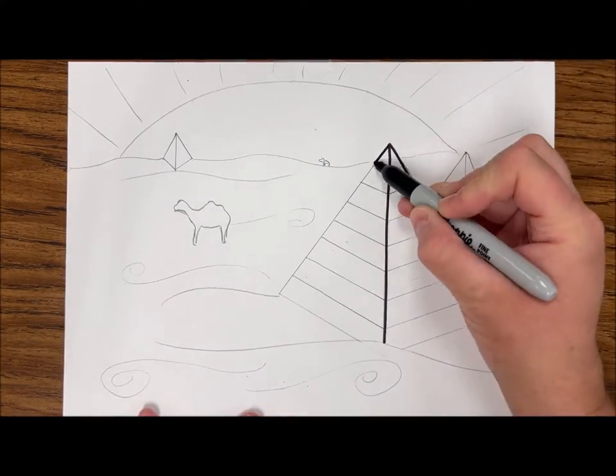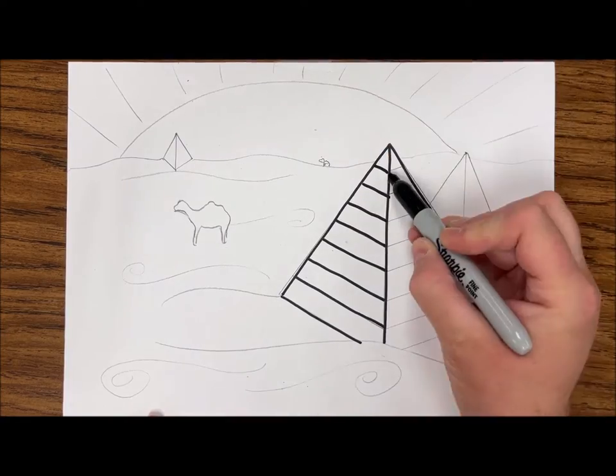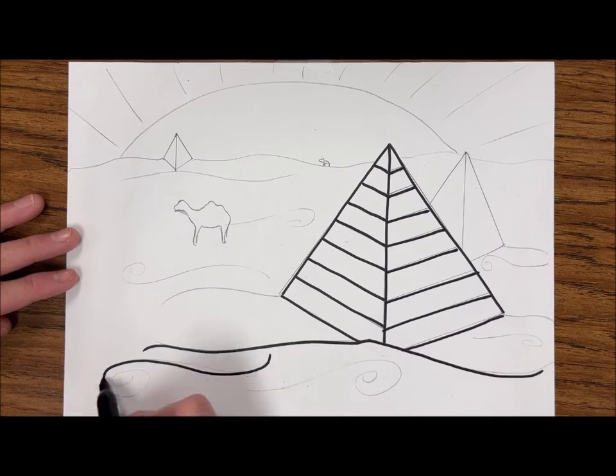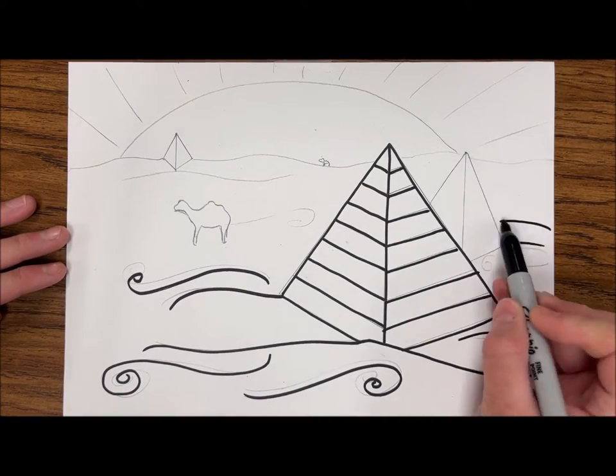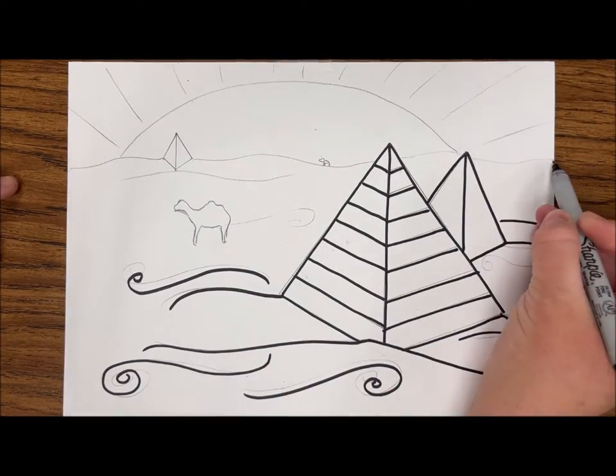Next, I am going to outline all of my pencil lines with black marker. For the foreground, the area towards the bottom of the page, I'm using a regular thickness of black Sharpie. Then when I get towards my background, those smaller shapes, I'm switching to a fine point Sharpie.